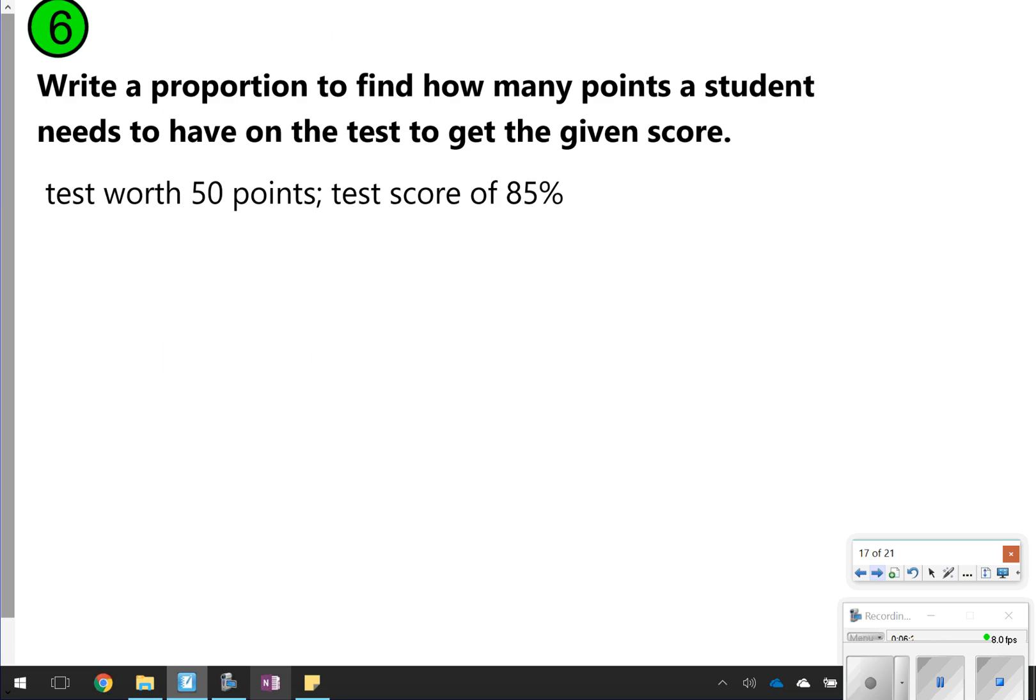This one says write a proportion to find how many points a student needs to have on the test to get the given score. However, notice that the test is worth 50 points, so it's out of 50 points. And then you have a test score of 85%. Something you need to know about percents is that all percents are out of 100.